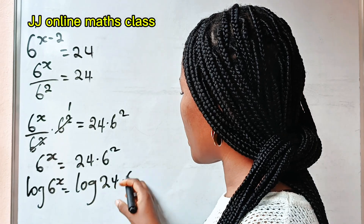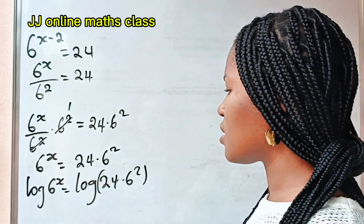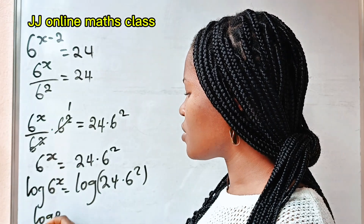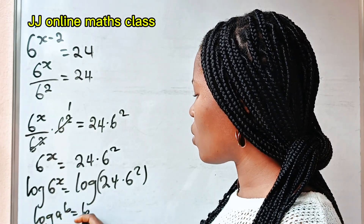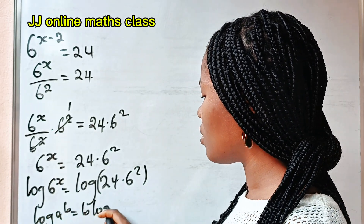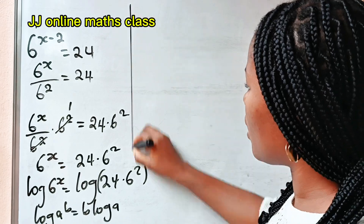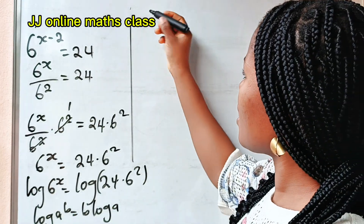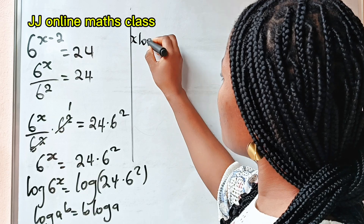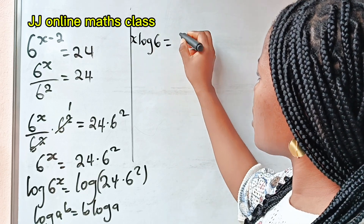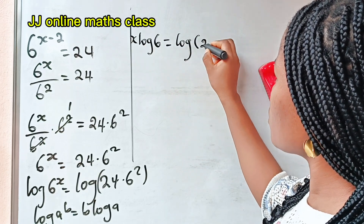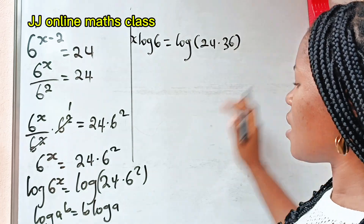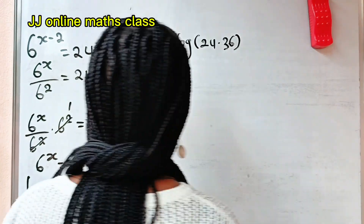And this is what we are going to have. Now, when you have log of a raised to the power of b, this is equal to b multiplied by log a. Therefore, we can write this as x multiplied by log 6 is equal to log of 24 multiplied by 36, since 6 squared gives us log 36.